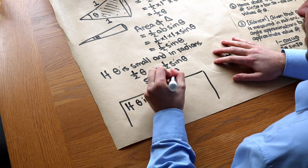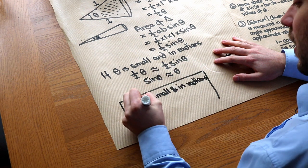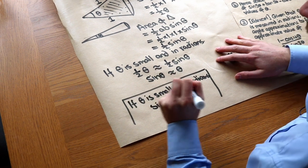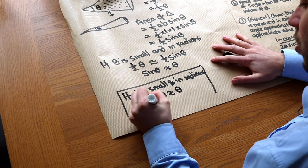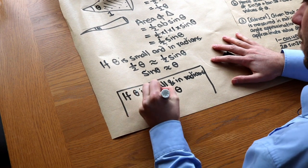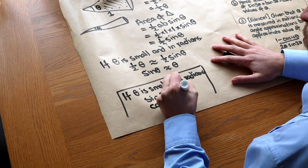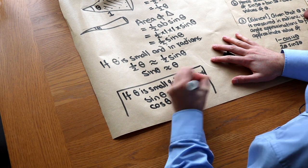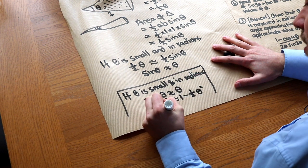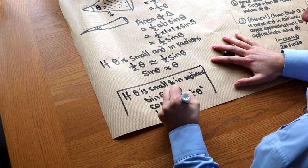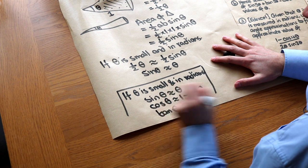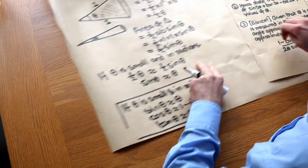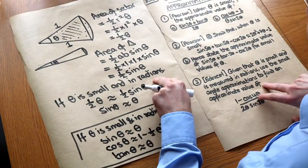So if theta is small and in radians, we have three approximations. First, sinθ ≈ θ. Second — and I'm not going to prove this one — cosθ ≈ 1 − ½θ². And finally, tanθ ≈ θ as well. We're going to use these to solve various questions.